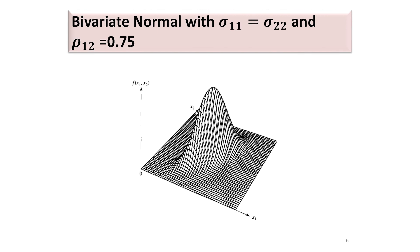Now let's look at the situation where the correlation coefficient is 0.75. Comparing this diagram with the case where the correlation coefficient is 0, we can see that here the distribution is more peaked.